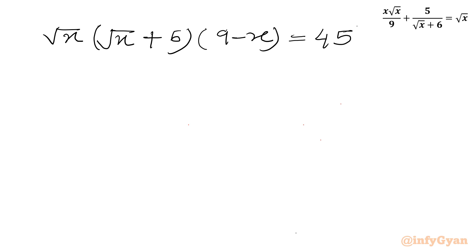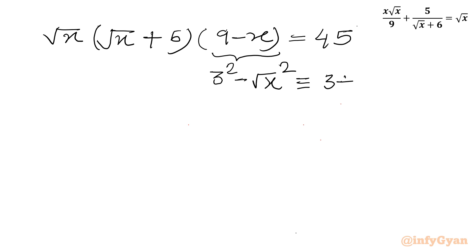Now I can write 9 minus x as 3² minus (√x)², which further can be written as (3 plus √x)(3 minus √x), using the difference of two squares identity.